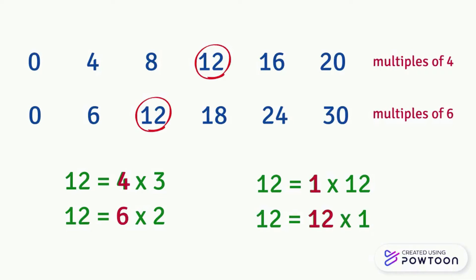Multiples of a number are the product obtained when the given number is multiplied by the same number or another number. We should know that each number is a multiple of 1 and of itself.